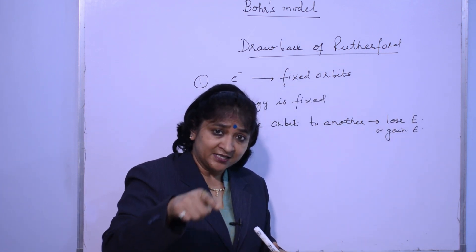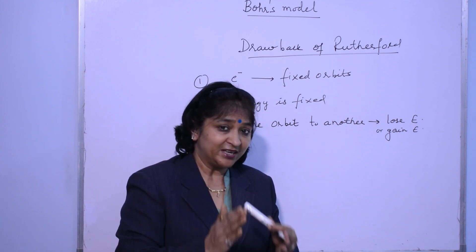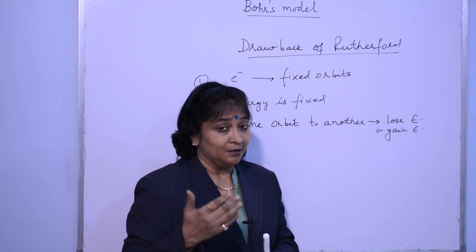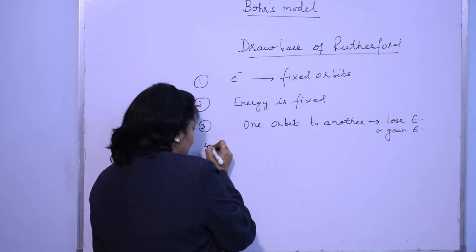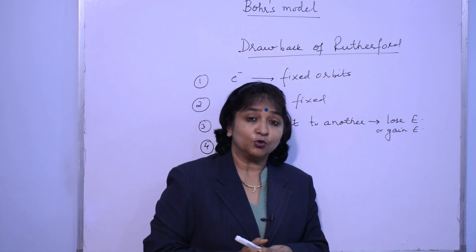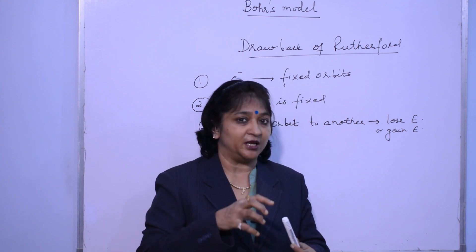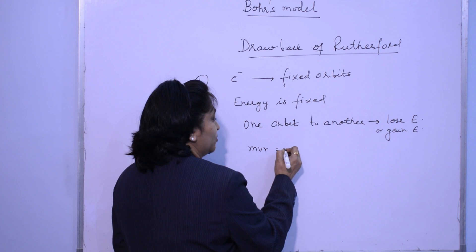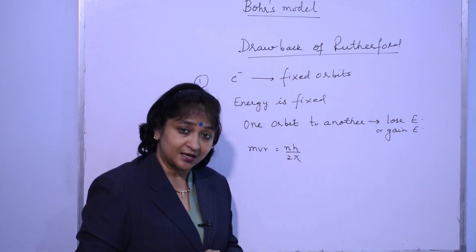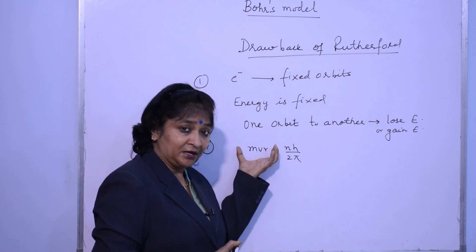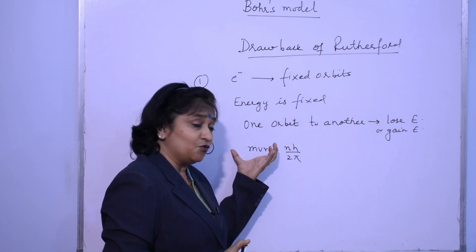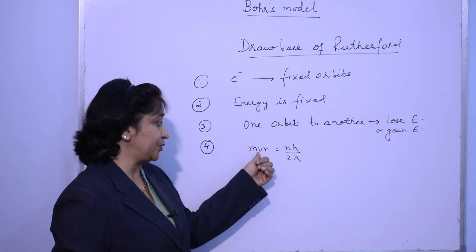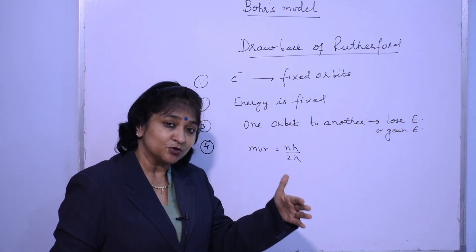So long as the electron is in fixed orbits, its energy is fixed and quantized. It will lose or gain energy only when it moves from one orbit to another orbit. Now, when the electron is to move in orbits, it is not possible that it gets all orbits — only certain orbits are permissible. Those orbits will be based upon angular momentum: only those orbits are permissible where angular momentum is in integral multiples of nh/2π. The angular momentum is mvr, where m is the mass of the electron, v is the speed, and r is the radius of the orbit.